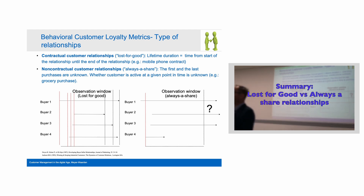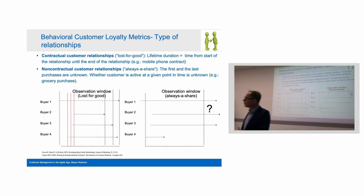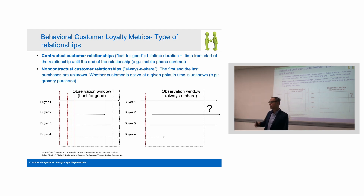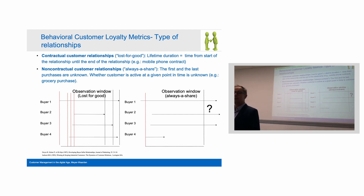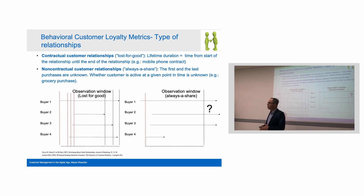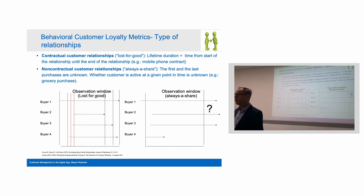To summarize: there are different relationship types — lost-for-good versus always-a-share. Always-a-share customers are in non-contractual markets such as grocery or retail, and relationship duration can only be measured with probabilities because we don't know after a given date if a customer is still active. Lost-for-good customers are in contractual or subscription markets, where we can quite easily predict the relationship length because we know both the first and last date of purchase.